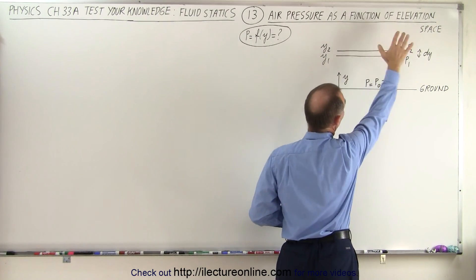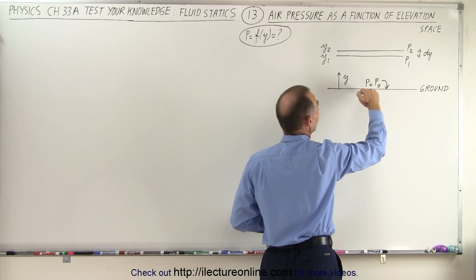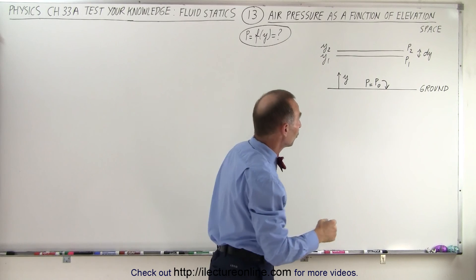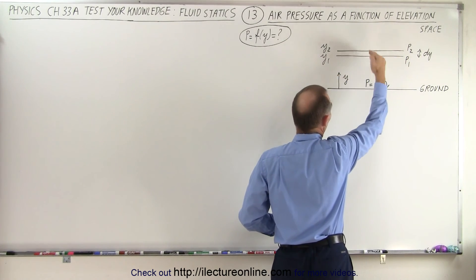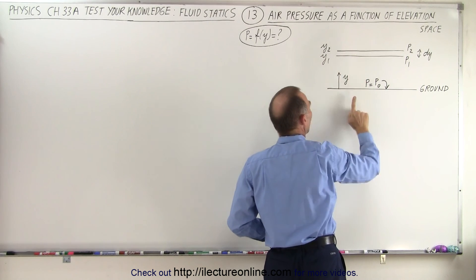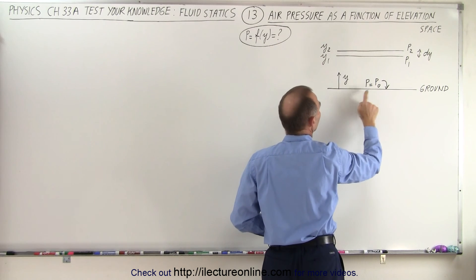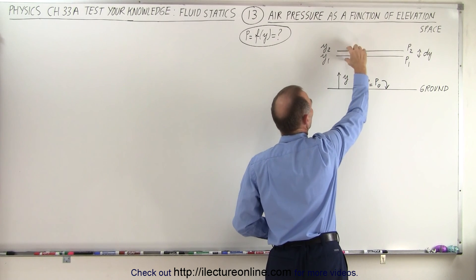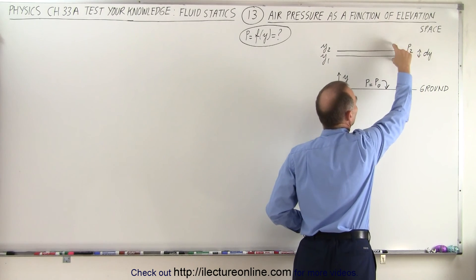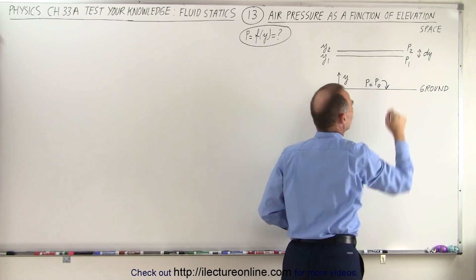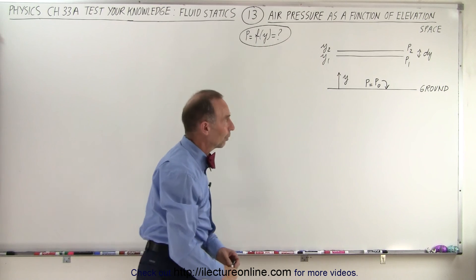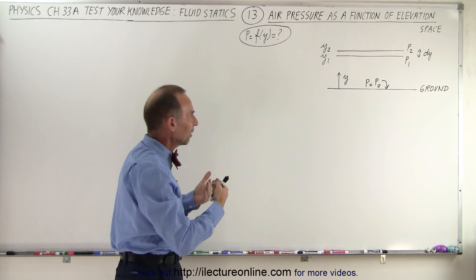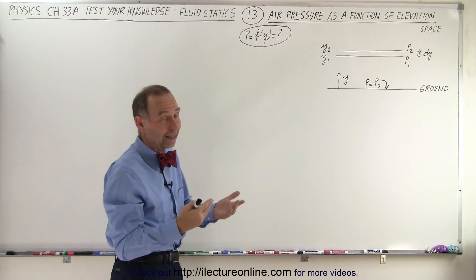Let's say that this here is the ground and up there is space. As you go higher and higher up the mountain, the air pressure becomes less and less. If we have a small strip in the air at some elevation, the positive y direction is upward, and the pressure at the ground is equal to P sub zero. As we go from one location in space to another, over a small change in height, the pressure will change from P1 to P2. Height in this case would be y.